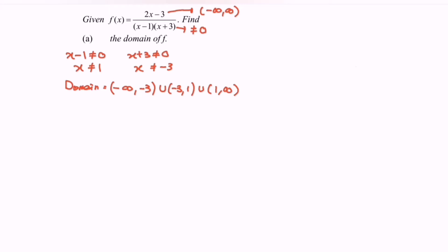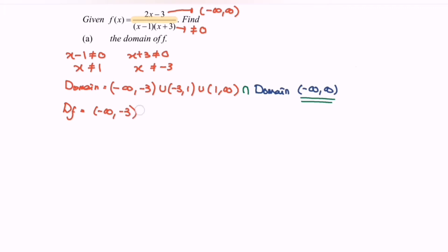The domain for the numerator is negative infinity to infinity, and the domain for the denominator is as found. Since the function is a rational expression (division), we take the intersection of both domains. The final domain of f is: negative infinity to negative 3, union negative 3 to 1, union 1 to infinity, where negative 3 and 1 are not included.